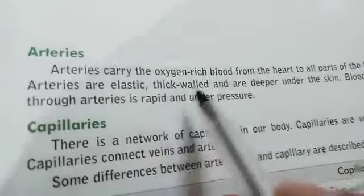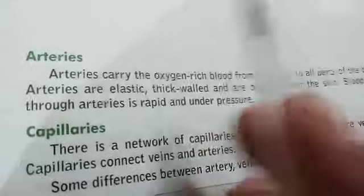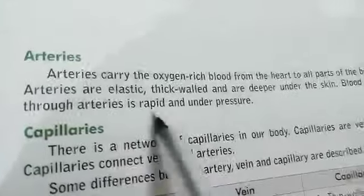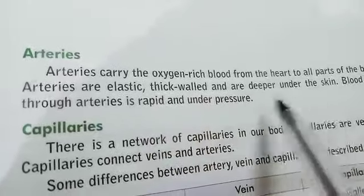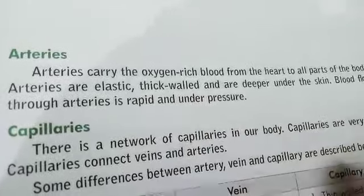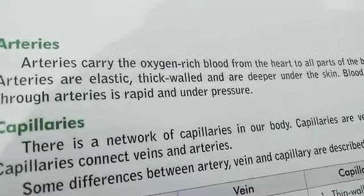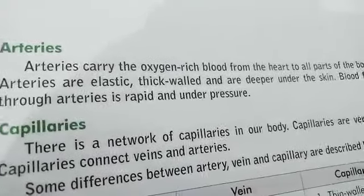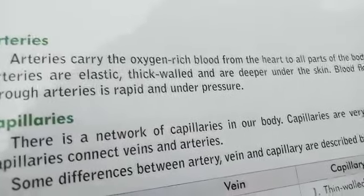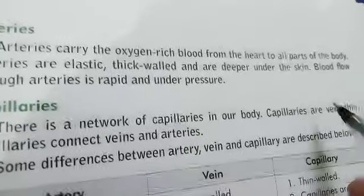Arteries are elastic and thick-walled. Their walls are thick, unlike veins whose walls were thin. Arteries are situated deeper under the skin, unlike veins which we can see from outside on the skin. Arteries are not visible from the outside.